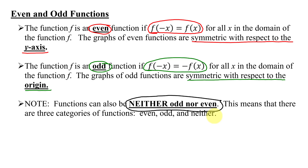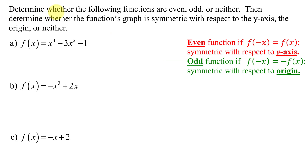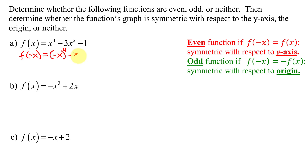So let's take a look at some examples. I need to determine whether the following functions are even, odd, or neither, and whether the function's graph is symmetric with respect to the y-axis, the origin, or neither. To show whether a function is even or odd, I need to know what f of negative x is. On my first example, f of negative x equals — I'm going to replace every x in the definition of f with negative x — so I get negative x all raised to the fourth power minus 3 times negative x all squared minus 1.